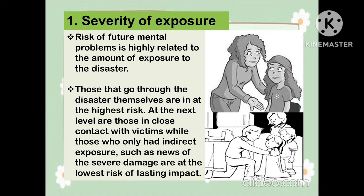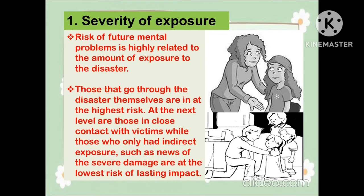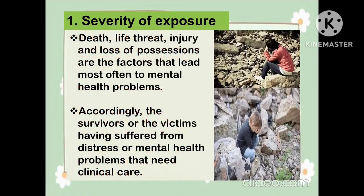The first risk factor is severity of exposure. Risk of future mental problems is highly related to the amount of exposure to the disaster. Those that go through the disaster themselves are at the highest risk. At the next level are those in close contact with victims, while those who only had indirect exposure, such as news of severe damage, are at the lower risk of lasting impact. Death, life threat, injury, and loss of possessions are the factors that lead most often to mental health problems. Accordingly, survivors or victims having suffered from distress or mental health problems may need clinical care.